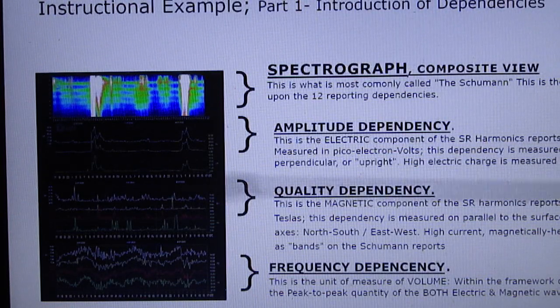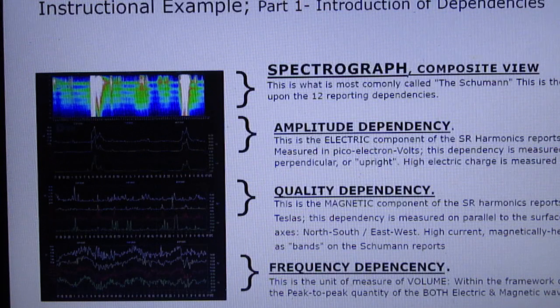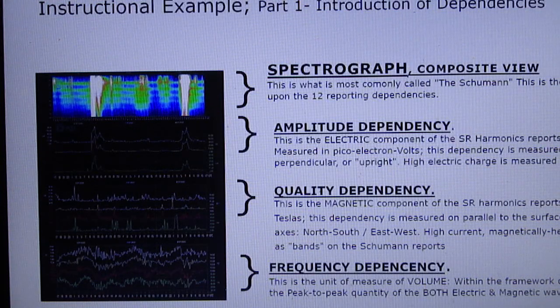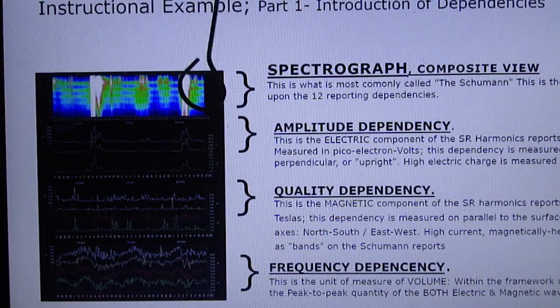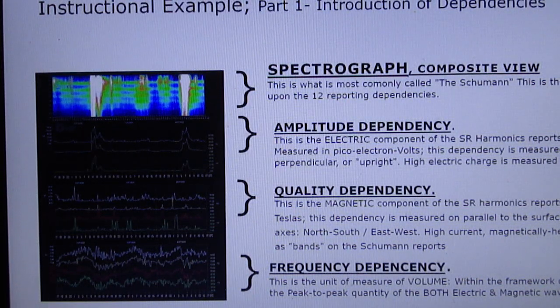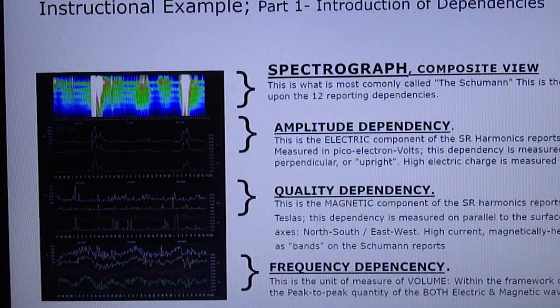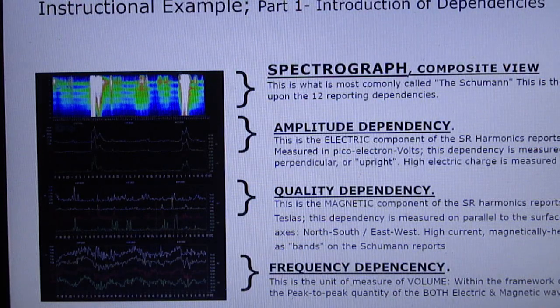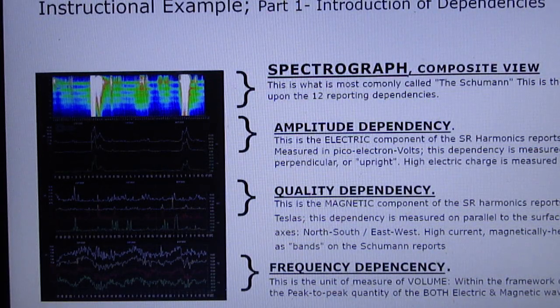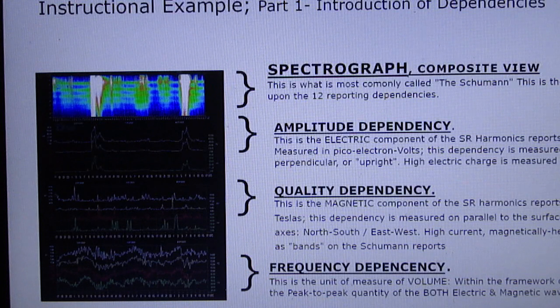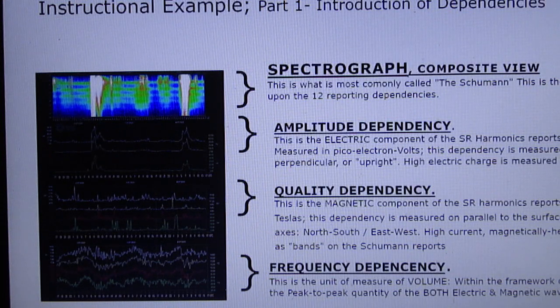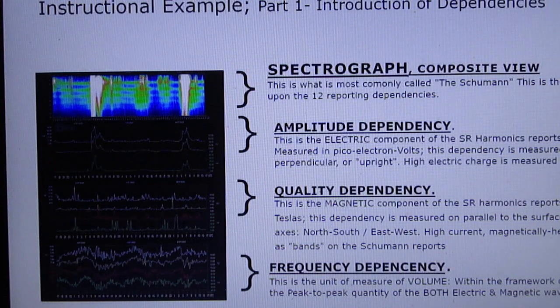All right, so the spectrograph, which is this right here, the spectrograph is the composite view of the twelve dependencies to the Schumann Resonance Harmonics report. So there are the three main dependencies of amplitude, of quality, and of frequency.